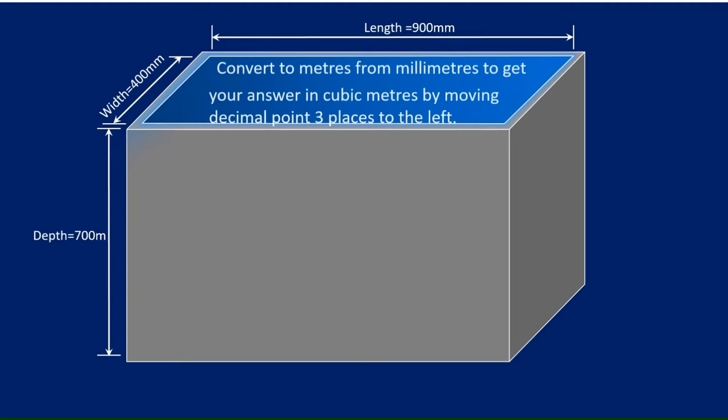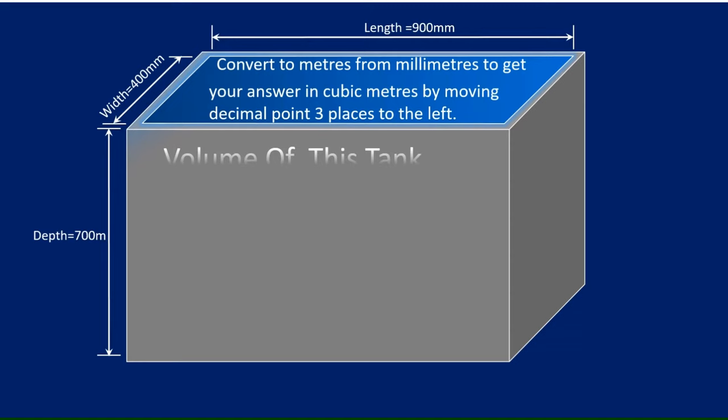We're going to convert that by moving the decimal point three places to the left. So for instance, the length there will go from being 900 millimeters to 0.9 of a meter.